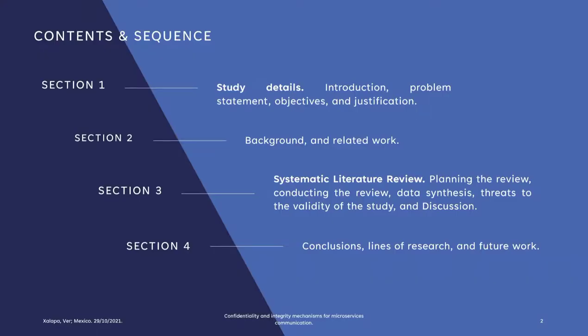This is the sequence to follow for the presentation. Section 1 addresses the study details. In Section 2, the background and related work are presented. Then, in Section 3, the systematic literature review is presented. And finally, in Section 4, the conclusion of the work as well as the lines of research and future work are presented.